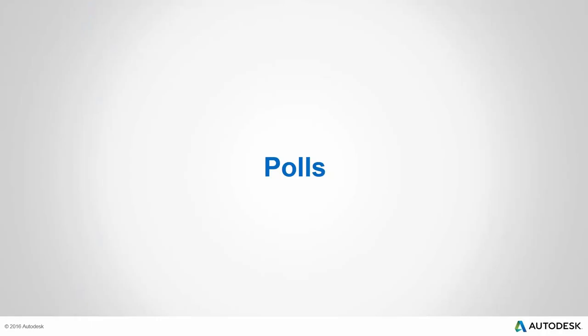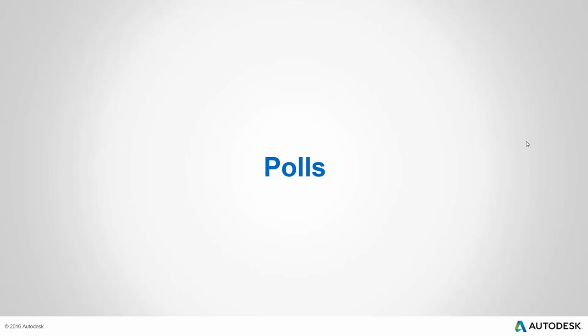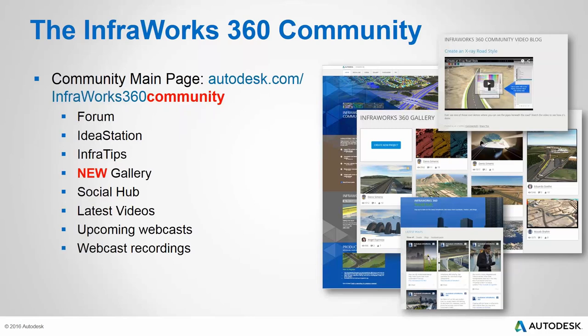The third poll, with the product team on the call, asks what area of the software attendees would like to see developed: road design, site design, residential, rail, or other. Results come in with 68% site design, 46% road design, 34% residential, 16% rail, and 14% other — site design is the clear winner.